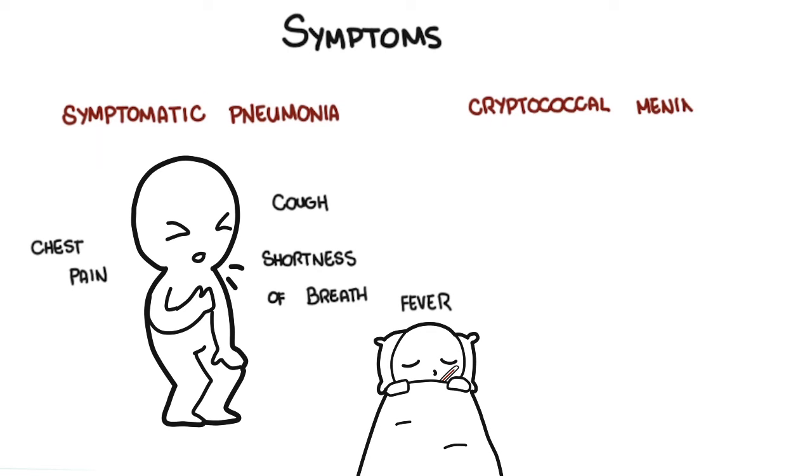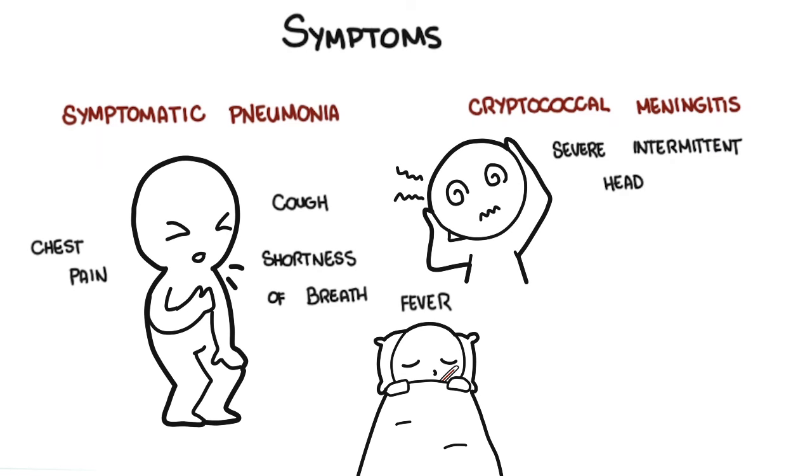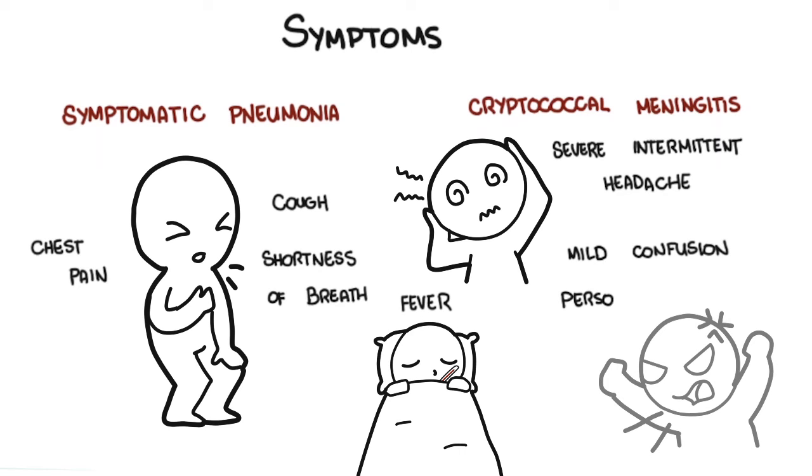In cryptococcal meningitis, it is usually slowly progressive with a waxing and waning course characterized by severe intermittent headaches, fever, followed by mild confusion, maybe some personality changes that can progress to stupor and coma.